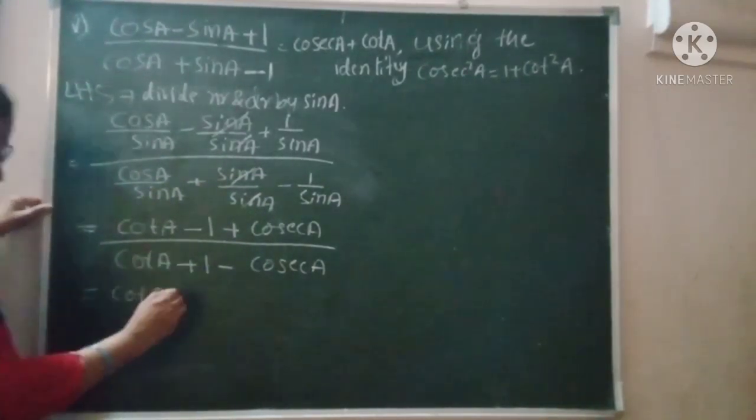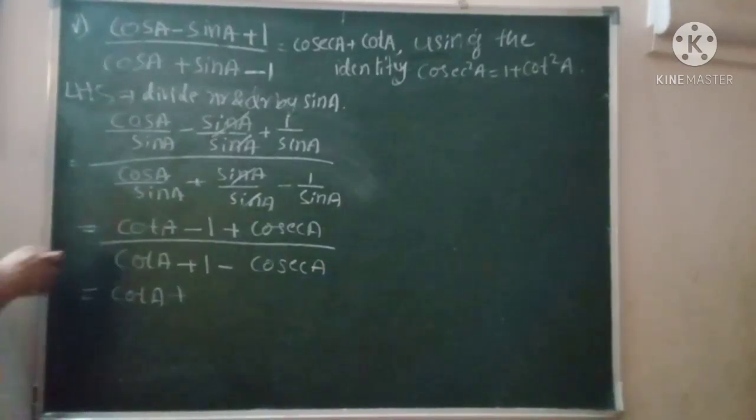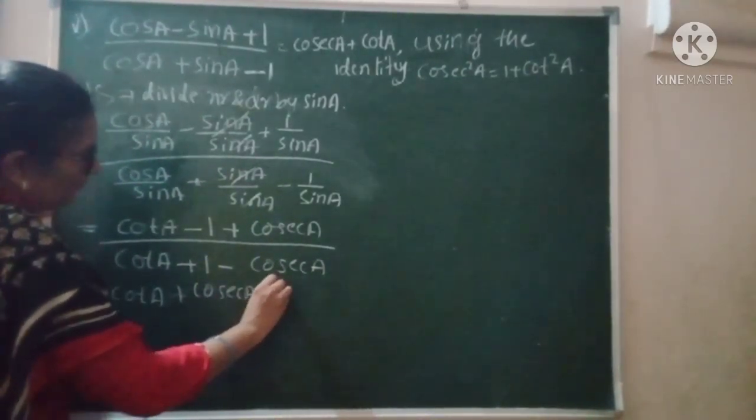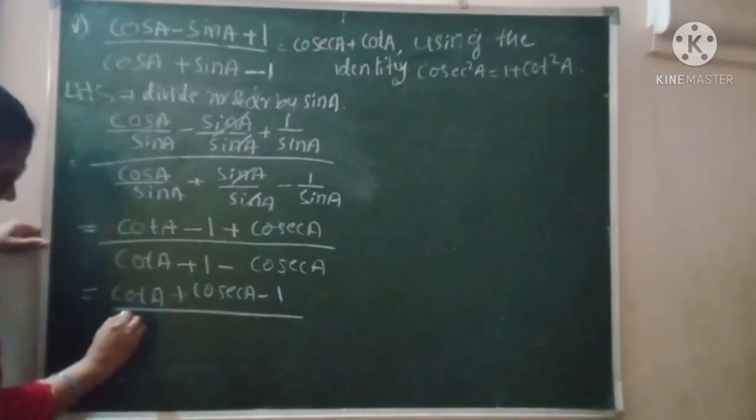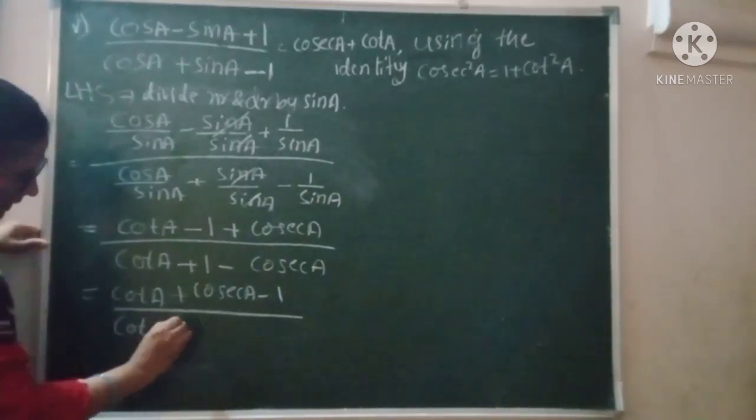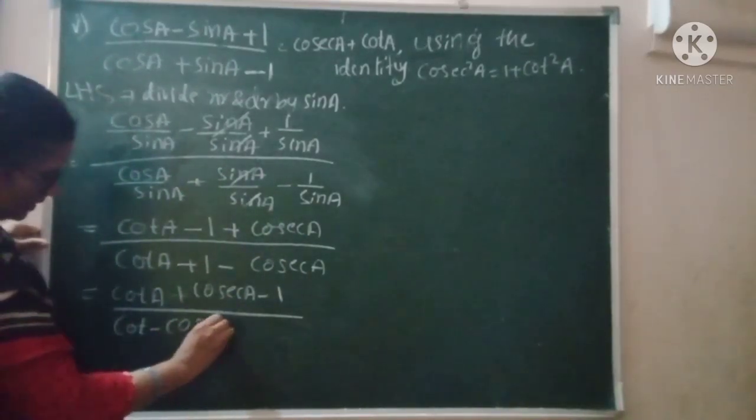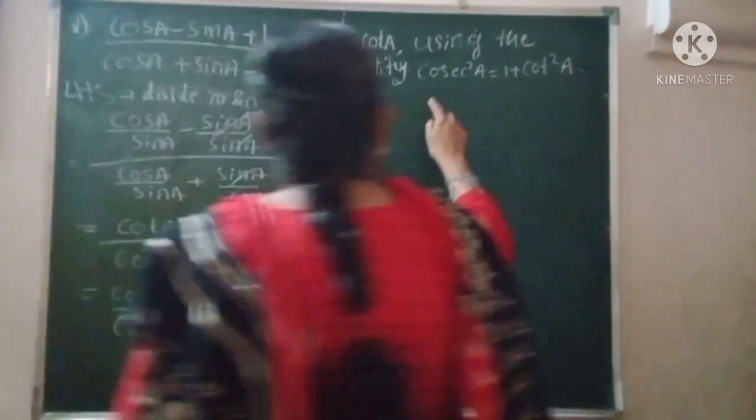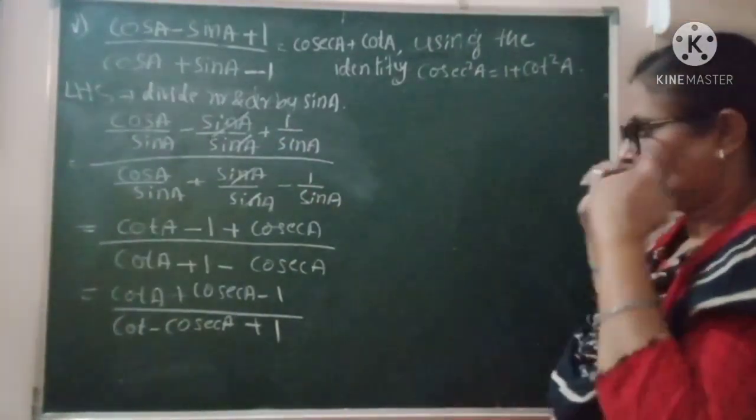plus cos A minus 1, which gives cot A minus cosec A plus 1.